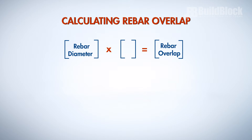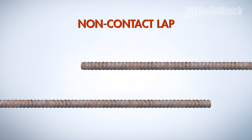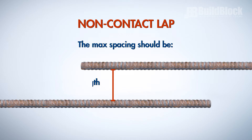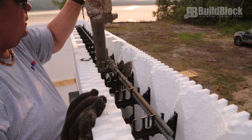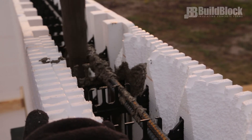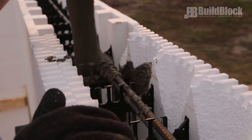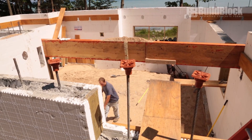When calculating for high seismic lap splices, follow the same formula but multiply by 48 instead of 40. A non-contact lap splice occurs when rebar is close but is not tied together. The max spacing should be one-fifth of the lap length and no more than six inches. BuildBlock's webs control the movement of rebar during the pour, and rebar fingers hold horizontal rebar in place. Rebar in walls should always be embedded at least three-quarters of an inch in concrete.